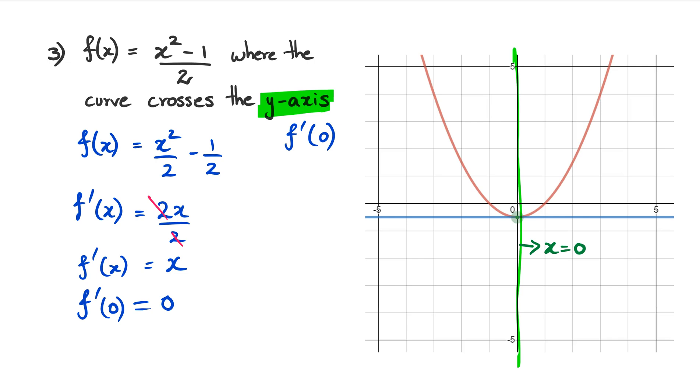Now, just kind of checking whether we're on the right track. If the gradient is zero, then that gradient line should be a flat line. And as you can see, it is. Therefore, we are on the right track. Okay. Let's go to question four.